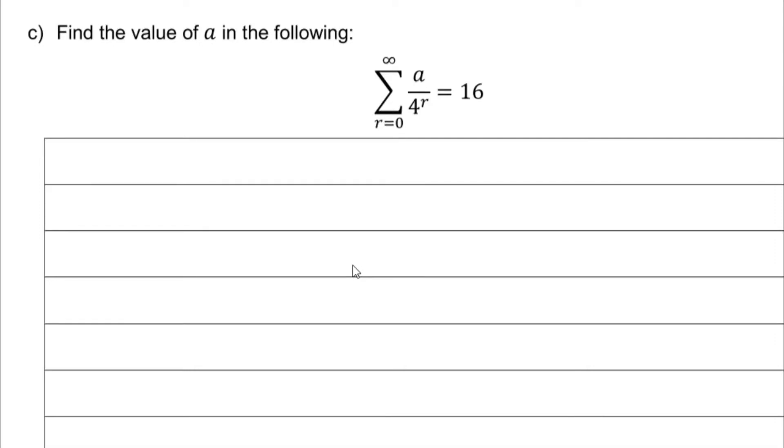Find the value for a in the following: we have a sigma with infinity on top and the equation is a over 4^r. One thing that you need to always know is that this whole thing is the sum.